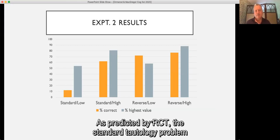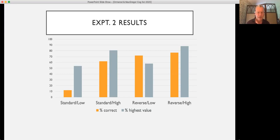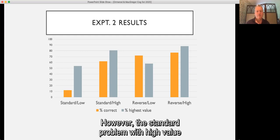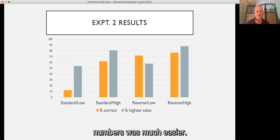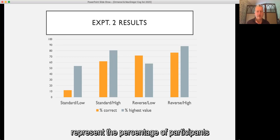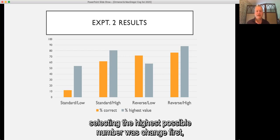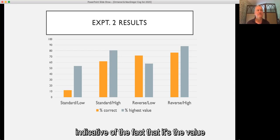As predicted by RCT, the standard tautology problem was by a long way the hardest of the problems. However, the standard problem with high value numbers was much easier and was solved almost as often as the reverse tautology problems. Note also that the grey bars in this diagram represent the percentage of participants who chose the highest value numeral in their first move. And even with the standard low value problems, you see a preponderance of participants selecting the highest possible number to change first. Indicative of the fact that it's the value of particular moves that is guiding participants' solution attempts.